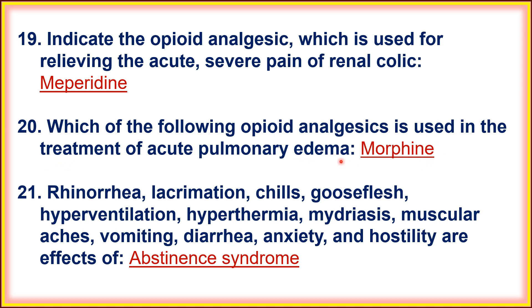Twentieth, which opioid analgesic is used in the treatment of acute pulmonary edema? Morphine is used for the treatment of acute pulmonary edema.